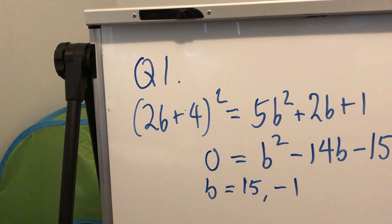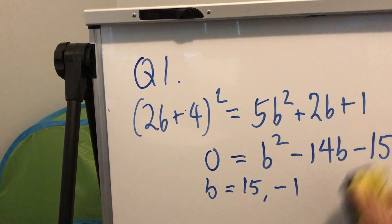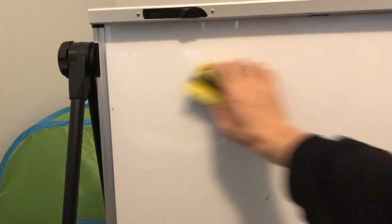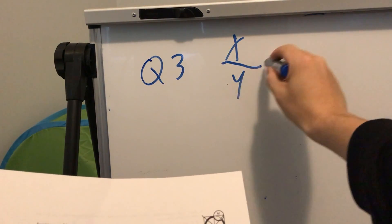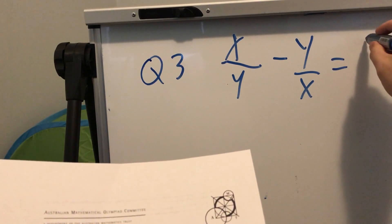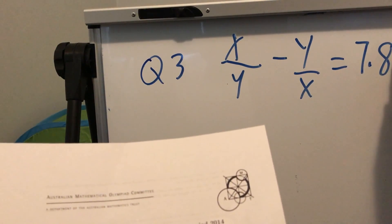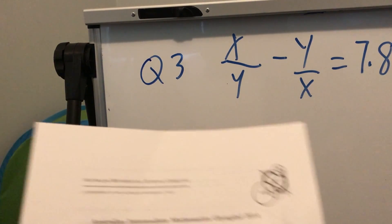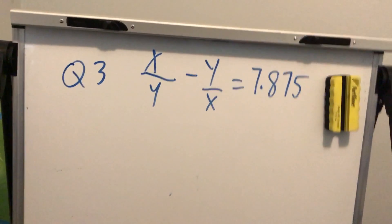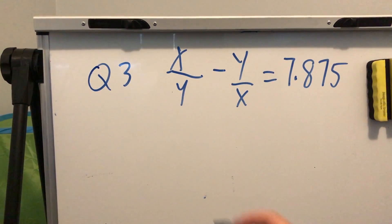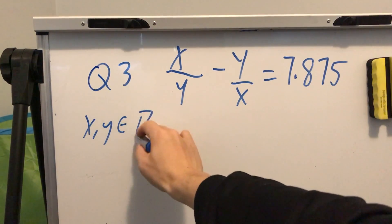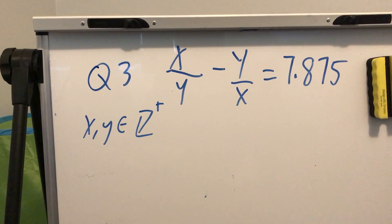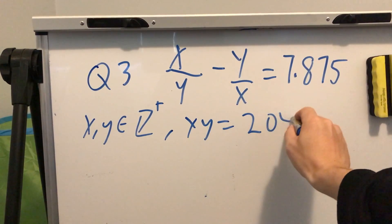So question 3 says: x/y - y/x = 7.875, where x and y are both positive integers, and xy = 2048.